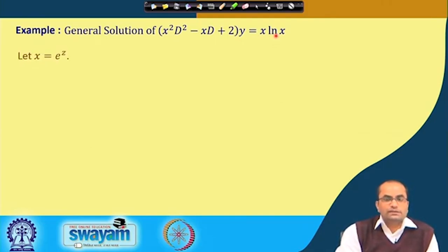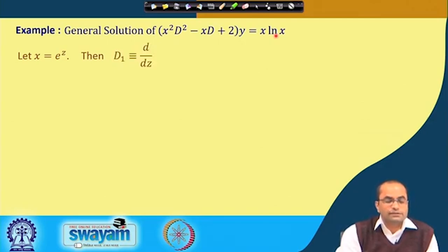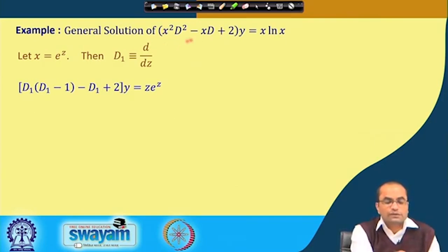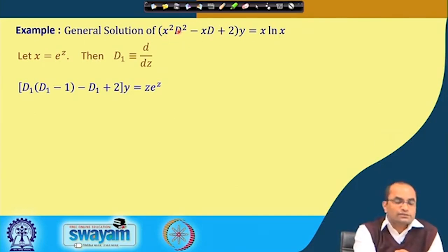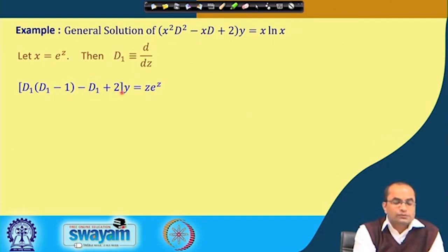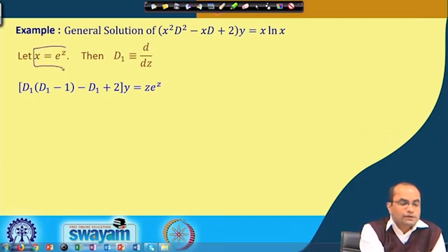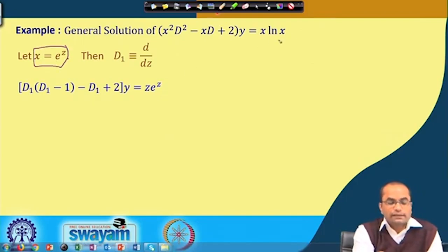Let us go through an example to demonstrate this idea. We want to find the general solution of x²D² - xD + 2y = x·ln(x). We will make the substitution x = e^z, or z = ln(x). Then with D₁ = d/dz, the x²D² term is replaced by D₁(D₁-1), the xD term is replaced by D₁, giving D₁(D₁-1) - D₁ + 2, operated on y.